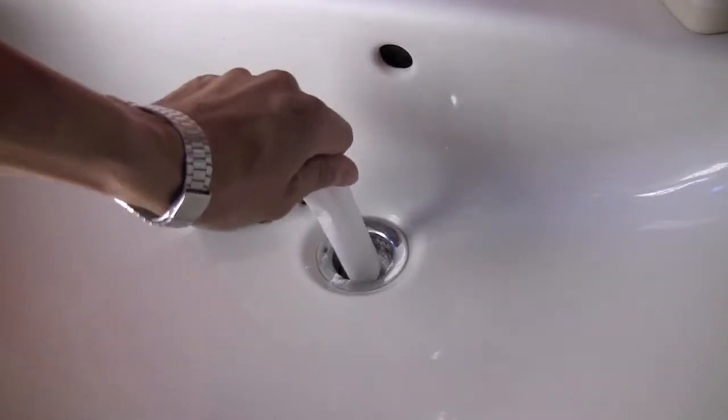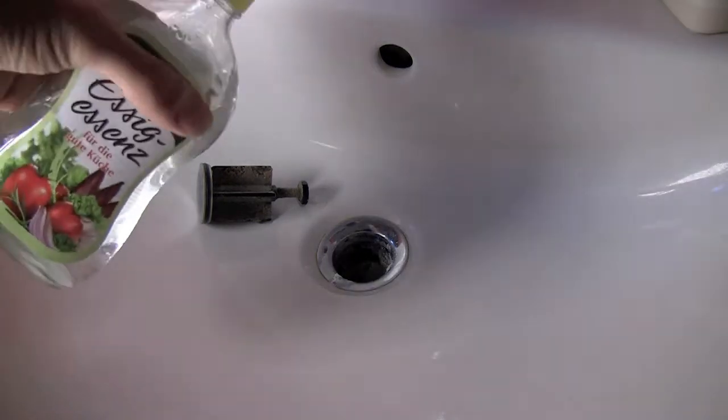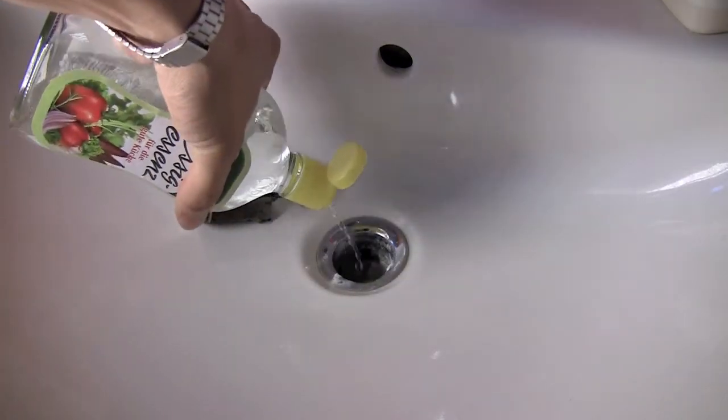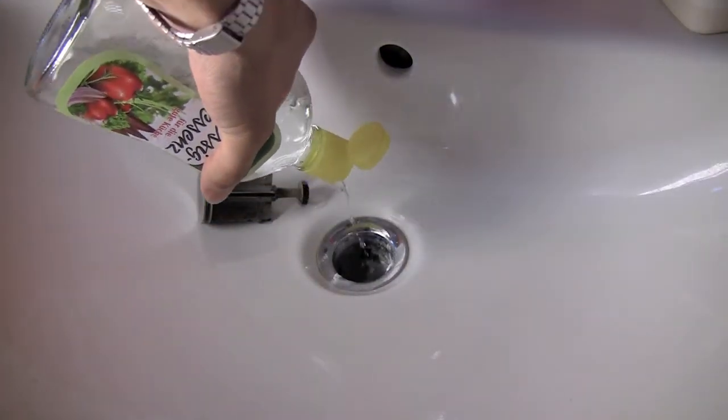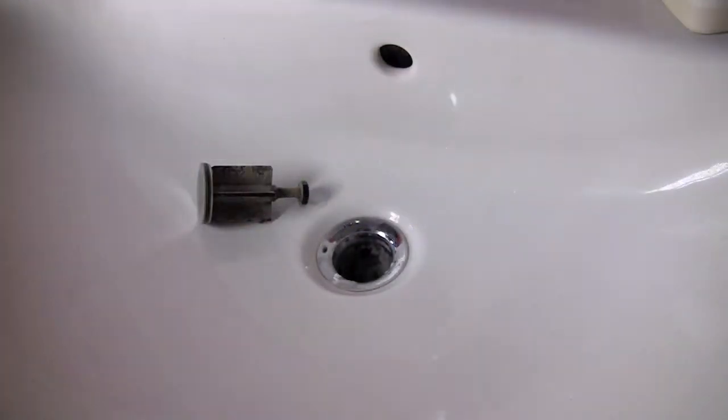Then we're going to add the vinegar on top of the baking powder. We're going to pour about four tablespoons. It doesn't need to be exact. The vinegar will react with the baking powder and you'll be able to hear a chemical reaction. It'll sound like a fizzing sound.